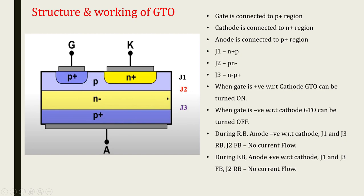In this structure there are three junctions: Junction J1 is the N+P junction, Junction J2 is the P–N- junction, and Junction J3 is the N-–P+ junction.